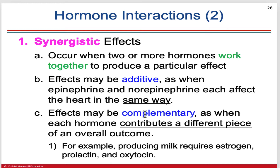There is also a complementary synergistic effect, where one hormone activates one pathway and the other hormone activates a different pathway, and both pathways together produce the end result. A perfect example is producing milk, which requires estrogen, prolactin, and oxytocin all to be present at the same time.